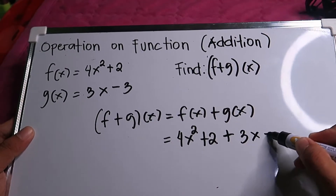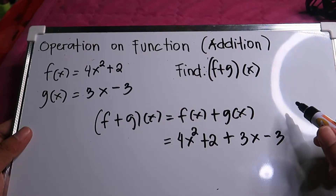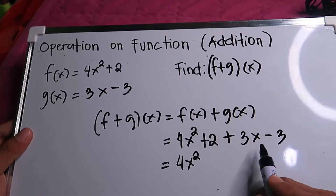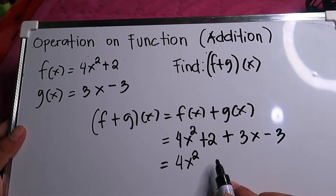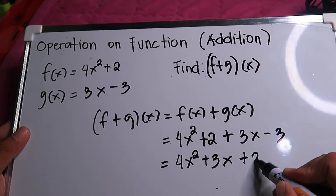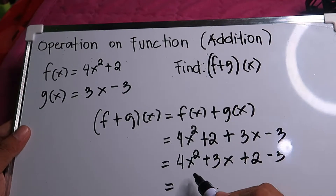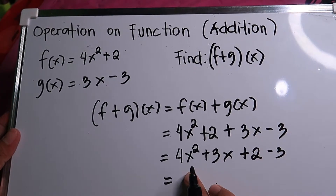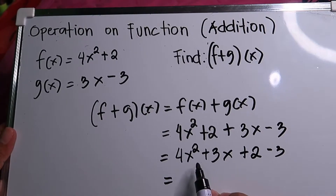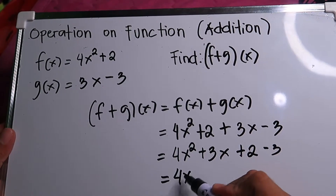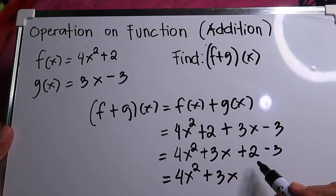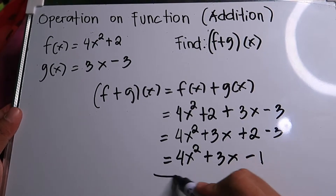Don't forget the plus sign. g(x) has the value 3x minus 3. Now combine like terms — but there are no same like terms here. We cannot combine 4x squared and 3x because they have different exponents on the variable. So the answer is 4x squared plus 3x, and 2 plus negative 3 is negative 1: 4x squared plus 3x minus 1.